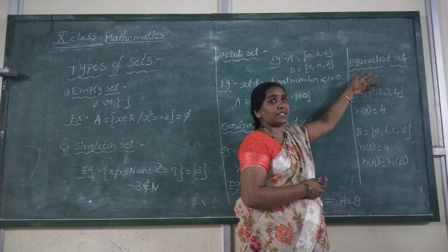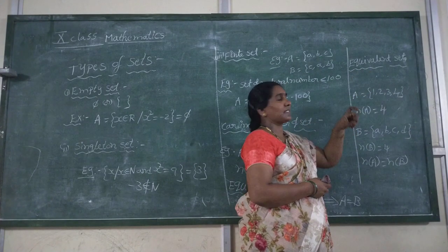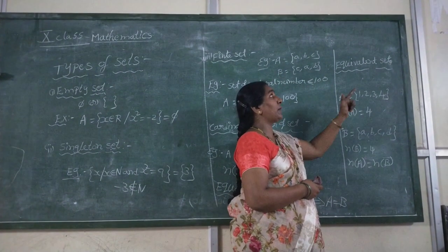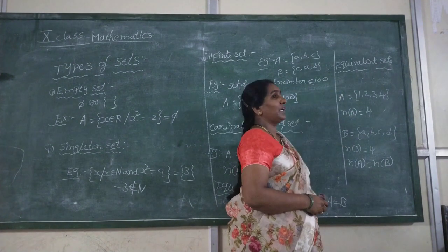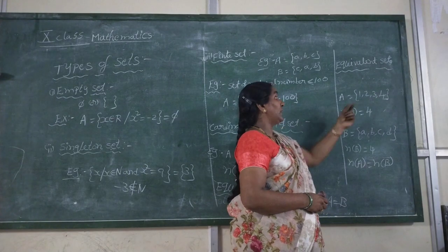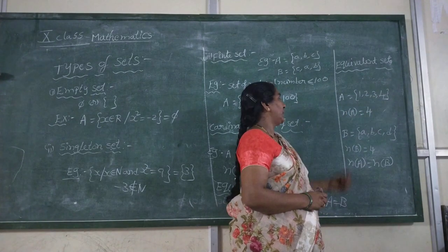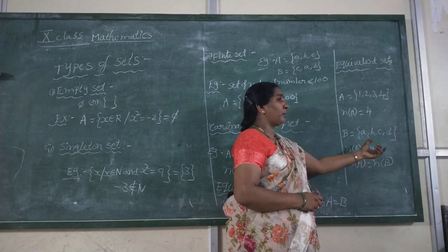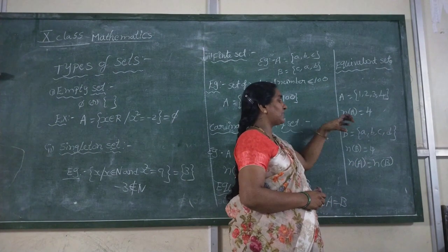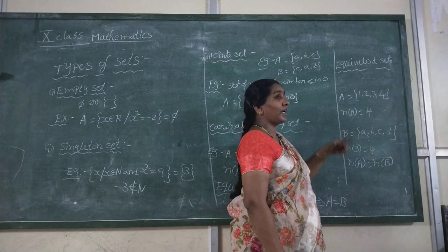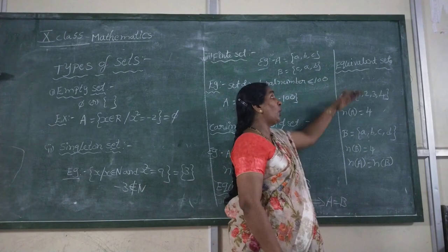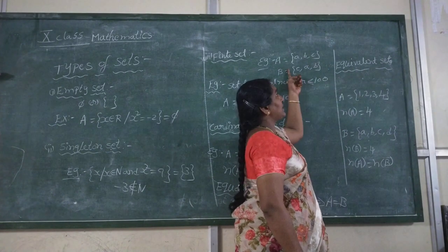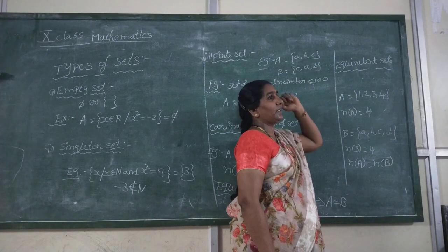Next, equivalent sets. Let A and B be two sets. If the number of elements in A and B are the same — n(A) = n(B) — then those two sets are called equivalent sets. For example, A = {1, 2, 3, 4}, n(A) = 4, and B = {A, B, C, D}, n(B) = 4. No need for the same elements. All equal sets are equivalent, but all equivalent sets need not be equal sets.